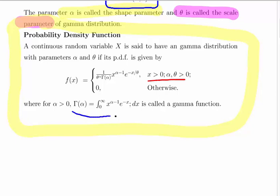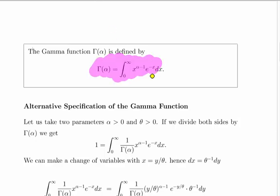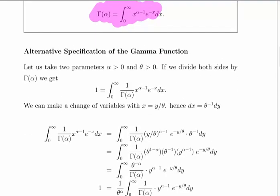The key point is that the PDF uses the Gamma function. The Gamma function's key definition is expressed in terms of integrals — there's also a definition in terms of factorials, which I'll skip here for brevity. Importantly, it is expressed in terms of e to the minus x — not e to the minus x divided by theta.